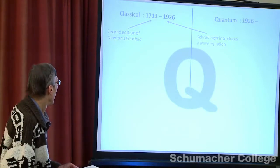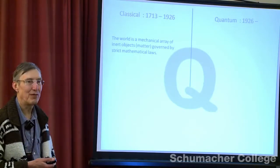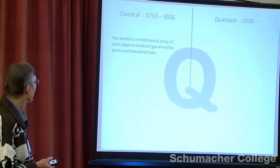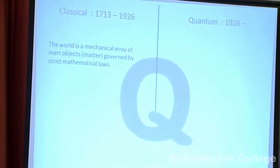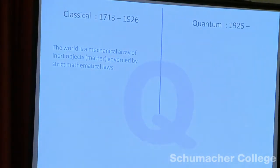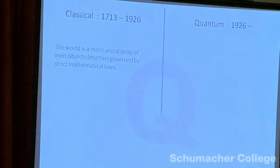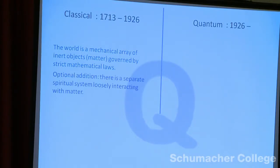On the classical side, you are probably much more familiar with this than with quantum theory. Newtonian classical physics was about the idea that the world is essentially matter. Originally, in the case of Descartes and Newton, it was matter and spirit. But then spirit was whittled away and more and more properties of spirit were moved over to the matter side. So essentially, for the average scientist today, the world is matter — a mechanical array of inert objects governed by mathematical laws, with spirit stuck on as an optional extra, loosely interacting with it.